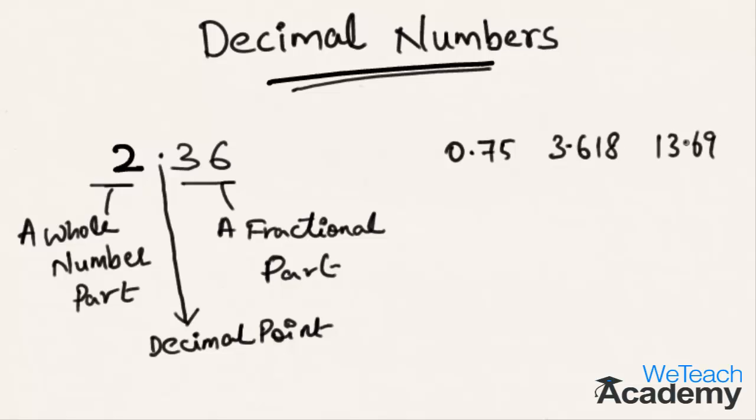In short, numbers with decimal points are called decimal numbers. Every decimal number consists of two parts - a whole number part which lies on the left side of the decimal point, and a fractional part which lies on the right side of the decimal point.